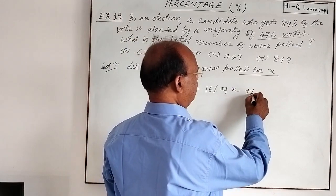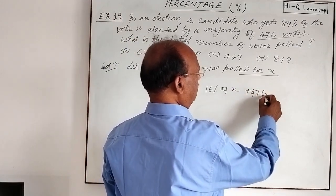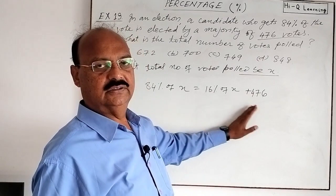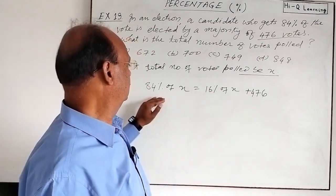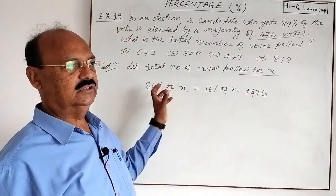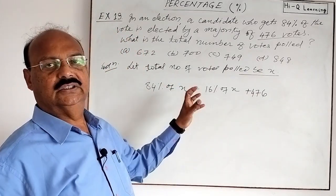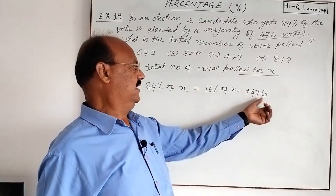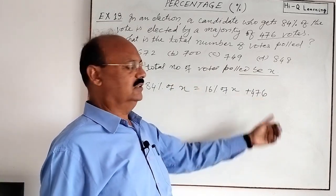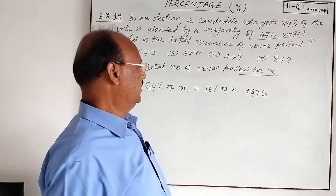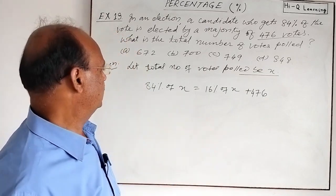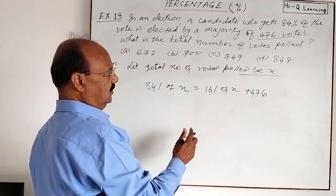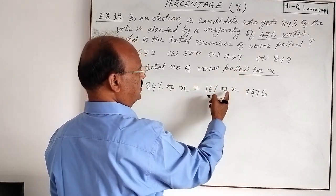So if we add 476 votes to the loser's votes, both candidates will get equal votes. If we add 476 to the loser's total, they become equal. Let us simplify it — we need to find the value of X. We will transpose terms to get the equation.